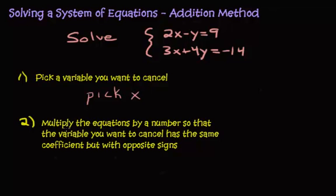Step 2, multiply the equations by a number so that the variable you want to cancel has the same coefficient with opposite signs. We have a 2 and a 3. Now what number can I turn a 2 and 3 into? What we're doing is we want the least common multiple. The least common multiple between 2 and 3 is 6. I want to turn those into 6.